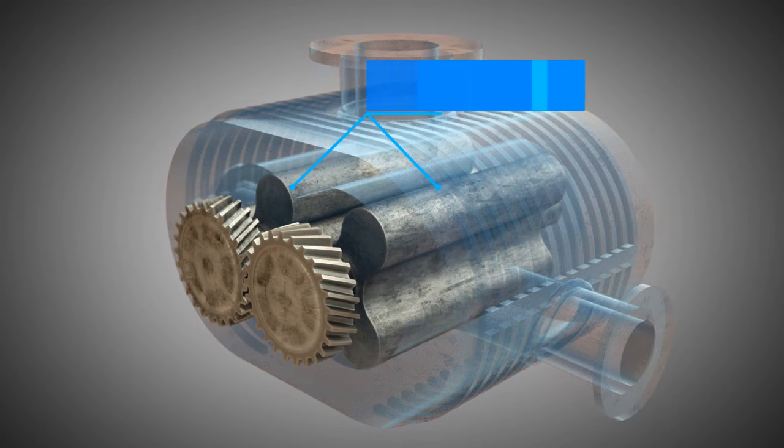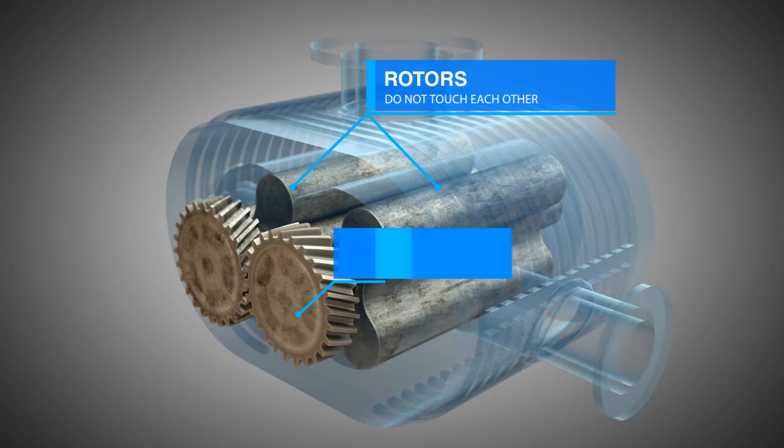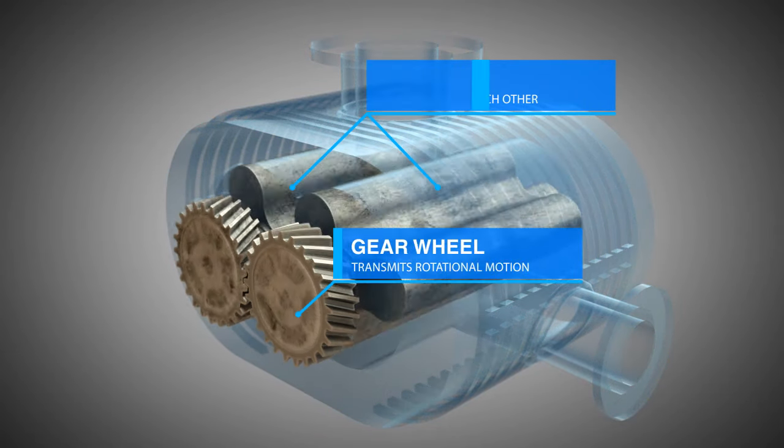The rotors have three straight lobes and do not touch each other. A gear wheel transmits the rotational motion.